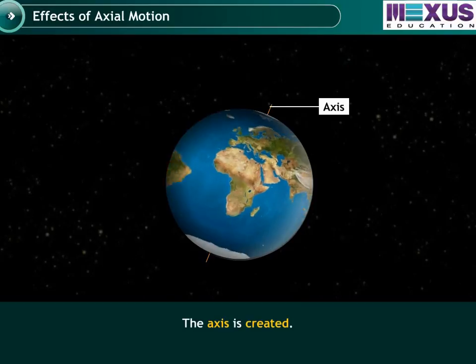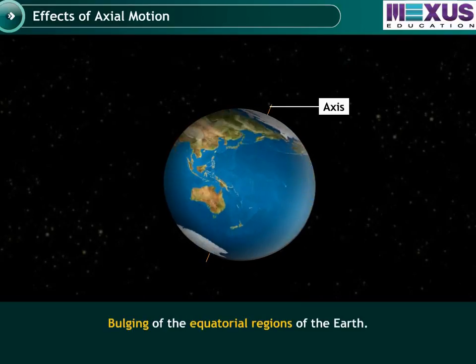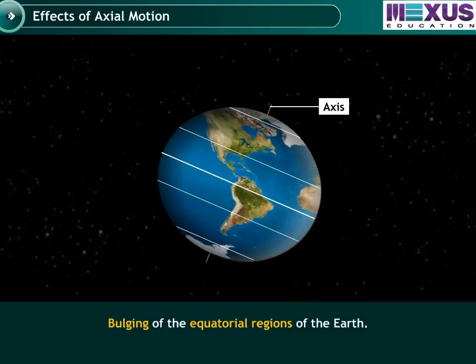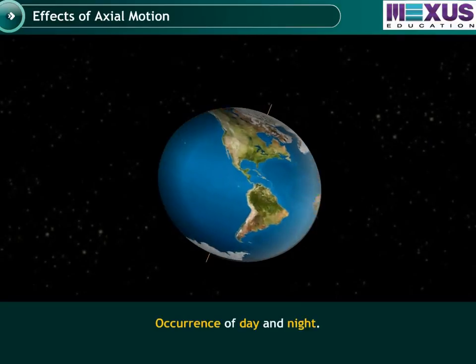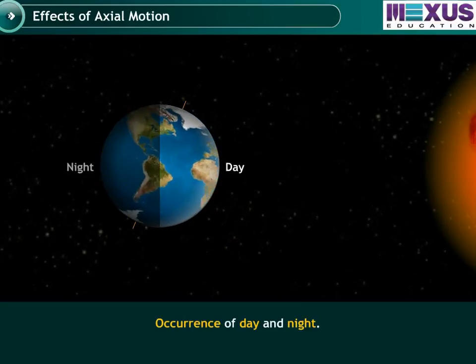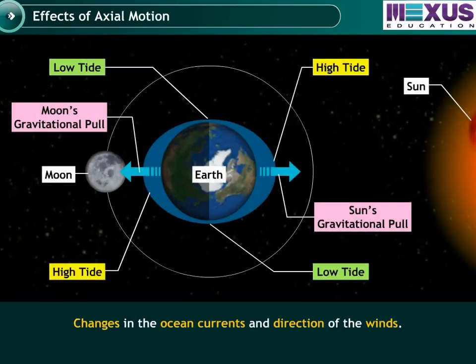It includes the creation of an axis. The Earth bulges in the equatorial regions. Axial motion causes the occurrence of day and night. It also influences changes in the ocean currents and direction of the winds.